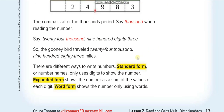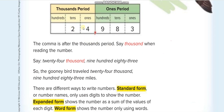There are different ways to write numbers — three ways. The first is standard form, which is when you write a number in digits, like this. The second is word form, which is when you write the number in words — like 'twenty-four thousand, nine hundred eighty-three.' The third is expanded form, which we will look at next.